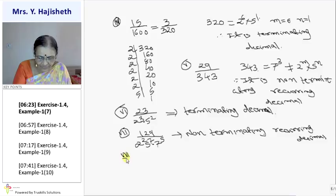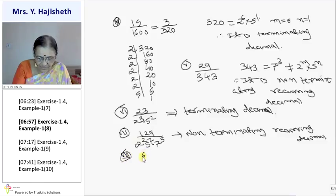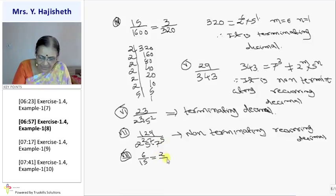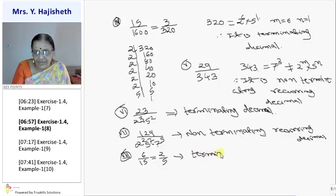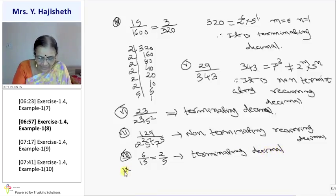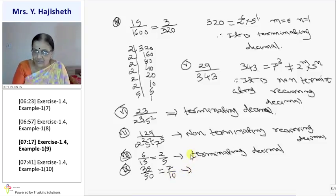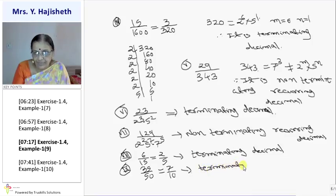The 8th sum is 6 upon 15. Let me reduce it — 6 by 15 is written as 2 by 5. That implies it is a terminating decimal. The 9th sum is 35 by 50, reduced as 7 by 10. And 10 is 2 raise to 1 into 5 raise to 1, so it is a terminating decimal.